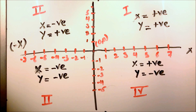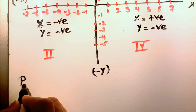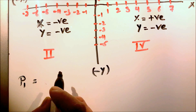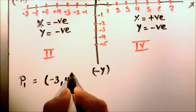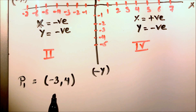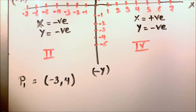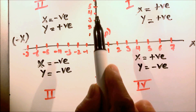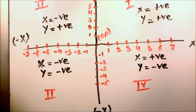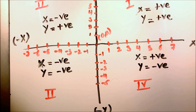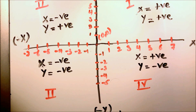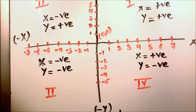I will show you how we mark a point on the coordinate plane. Suppose we have been given point P1 where the abscissa and ordinate are minus three and four. By looking at the numbers, we can say that x is negative, so we will go on the left-hand side, and y is positive, so we are going up — left and up. So point P1 will be located in the second quadrant.